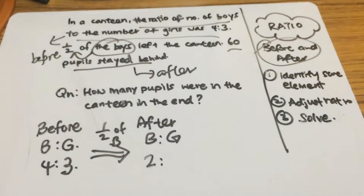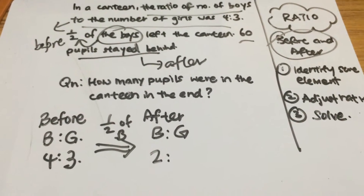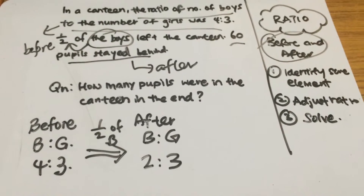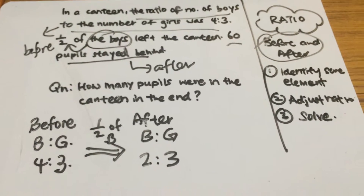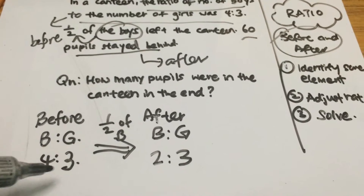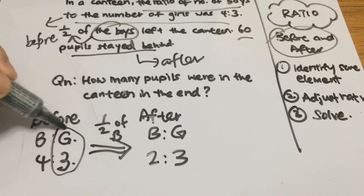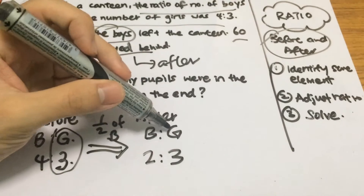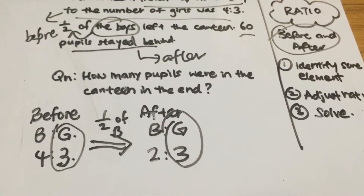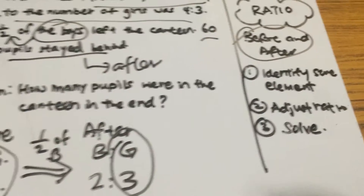What about the girls? The answer is three units. Why? Because there is no mention of any change in the number of girls, which means the number of girls remains the same before and after. So we identify the same element — the number of girls before and after remains the same — as mentioned in step number one.